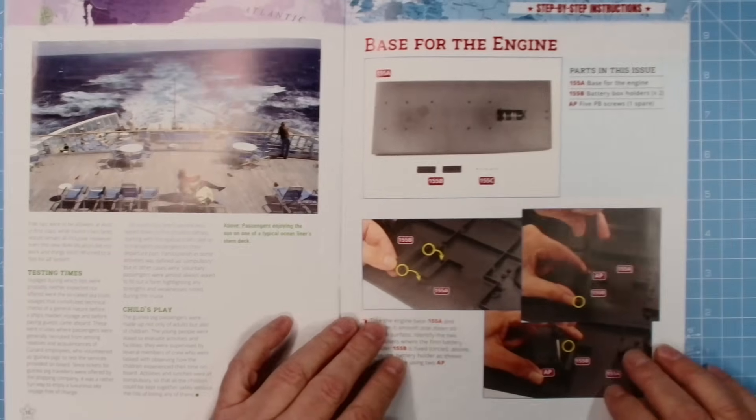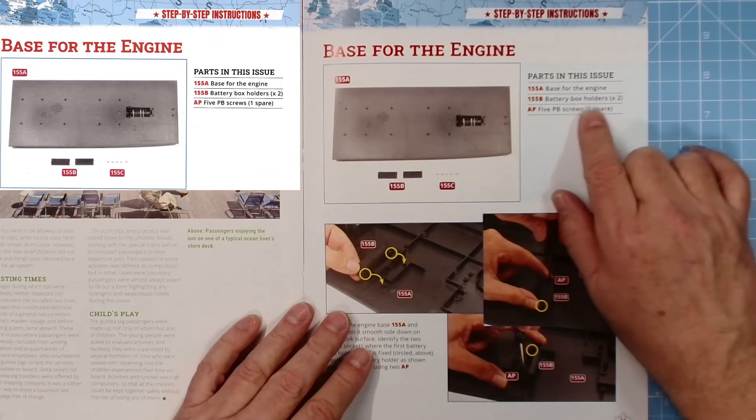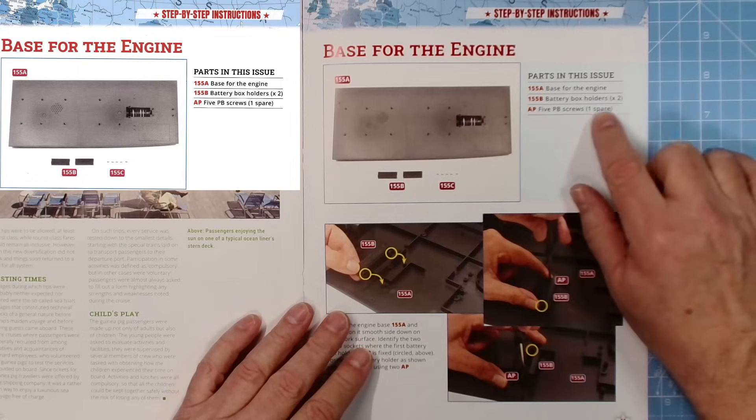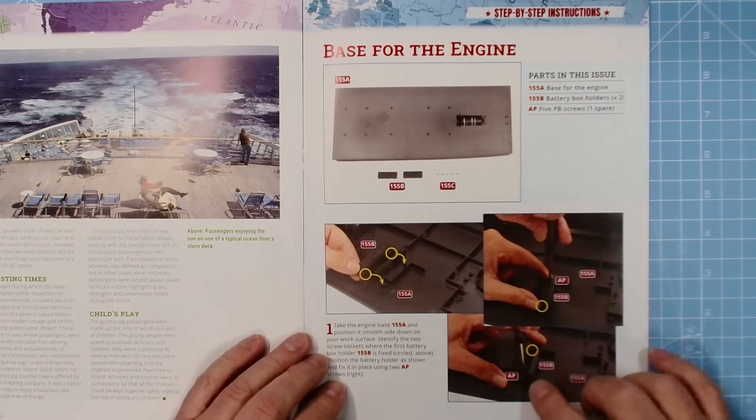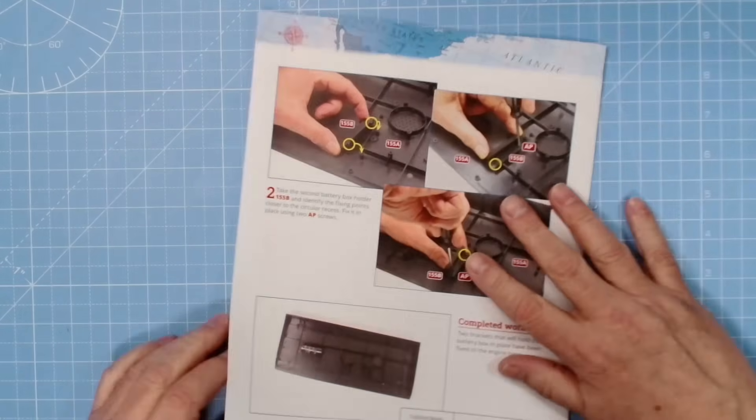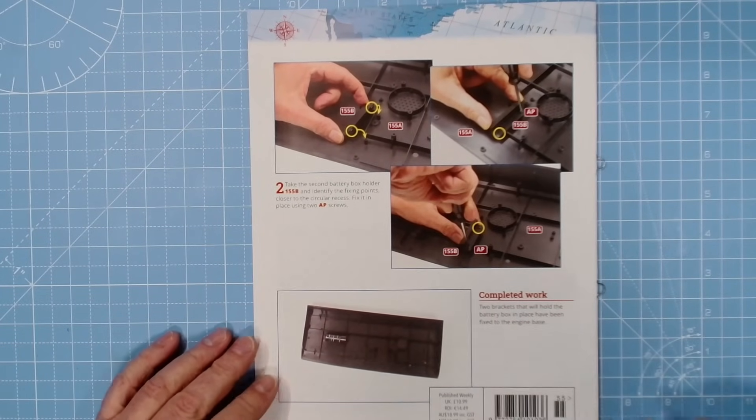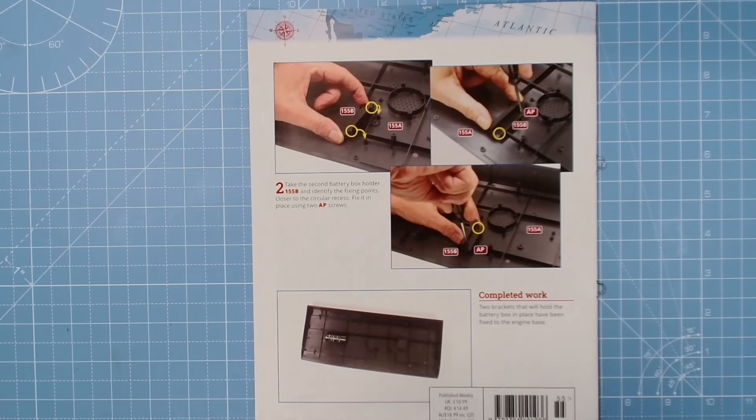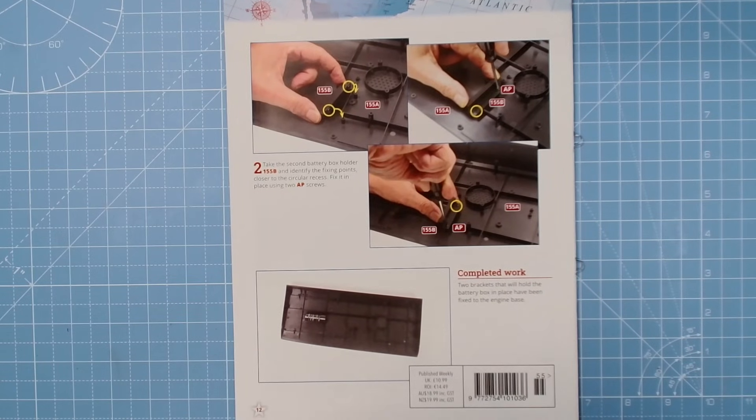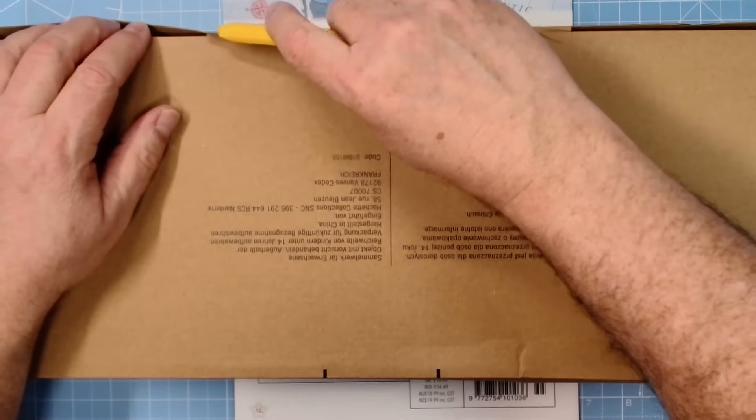Tipping, yeah. Base for the engine parts of this issue: base for the engine, battery box holders times two and AP screws. So yeah, we've got two brackets to fit underneath there. We go, you can see where actually the speaker goes as well. Two brackets so we'll hold the battery box in place. We don't get the battery box in this issue but we do get a big box and there's the big box. So without further ado, let's get on with the build, get the parts out.